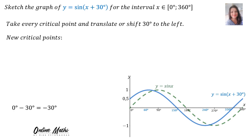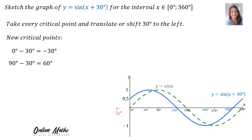Our new critical points: remember, the first critical point was at 0, so now you say 0 minus 30 is minus 30. That means here at negative 30, your graph would have started. But our interval is from 0 up to 360. The next critical point was 90 minus 30 is 60. So here at 60, our graph will turn for the first time.